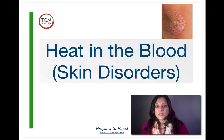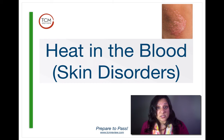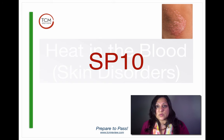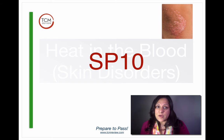Next we have heat in the blood leading to skin disorders — rashes that are red, psoriasis, eczema, herpes zoster, erysipelas — any kind of skin rash that looks red, inflamed, and irritated is treated with Spleen 10. Spleen 10 helps to move blood and also helps to cool blood, so it's a really important point for dermatological issues. Spleen 10 can also tonify and nourish blood as well, so it has a dual function.